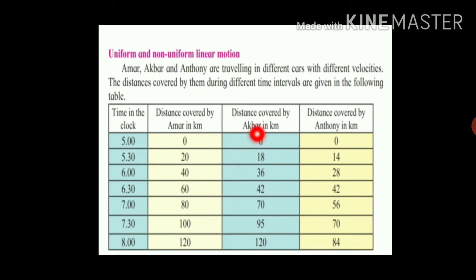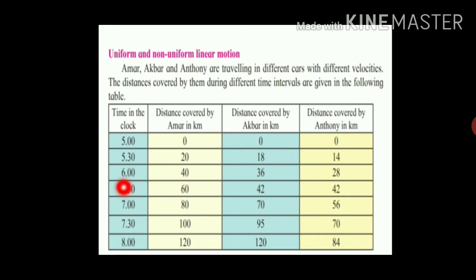Now let's see about Akbar. The distance travelled by Akbar: in the first 30 minutes, Akbar travelled 18 km. In the second 30 minutes, he again travelled 18 km. But in the third 30 minutes, he travelled only 6 km.